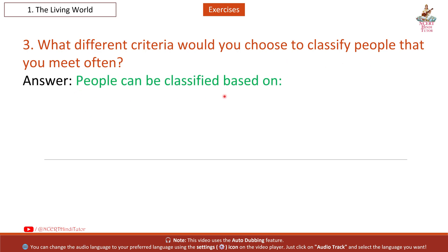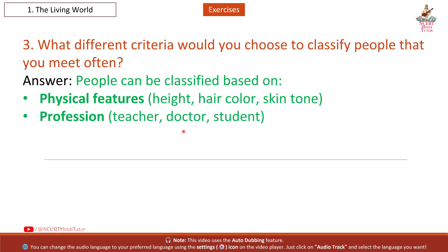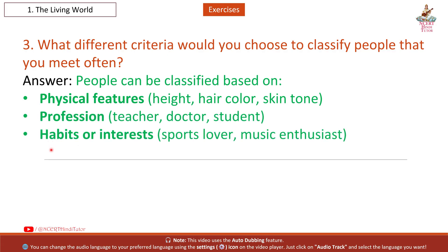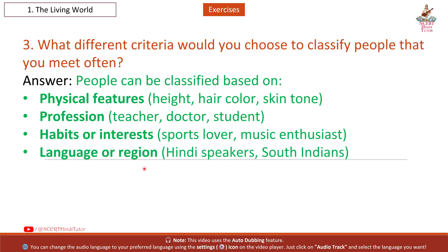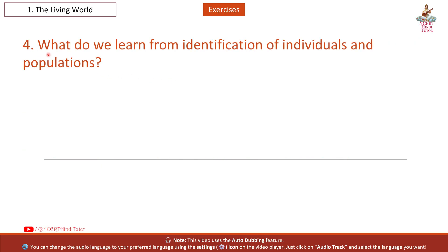Question 3: What different criteria would you choose to classify people that you meet often? Answer: People can be classified based on: first, physical features — height, hair color, skin tone; second, profession — teacher, doctor, student; third, habits or interests — sports lover, music enthusiast; fourth, language or region — Hindi speakers, South Indians; fifth, age or gender — adults, children, male, female.